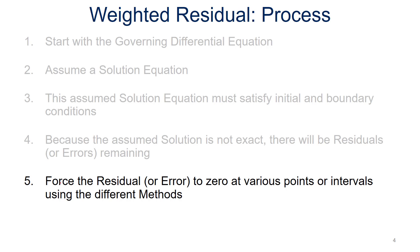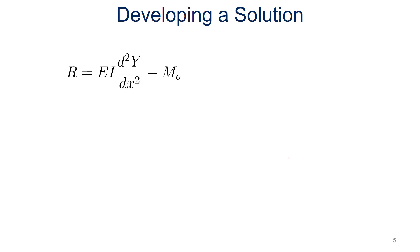Now what we're trying to do is force the residual or error to zero at various points or intervals using the different methods. So that's what we're going to do here with collocation. We have the residual equation. It's basically our governing differential equation. Instead of being equal to zero, it's equal to this residual.